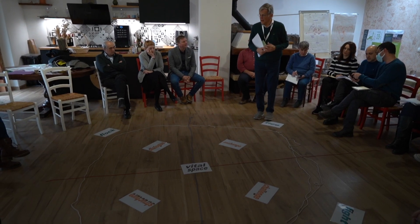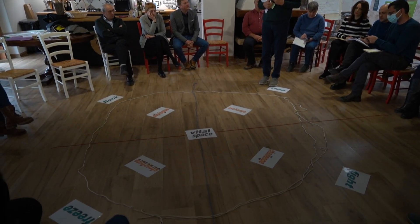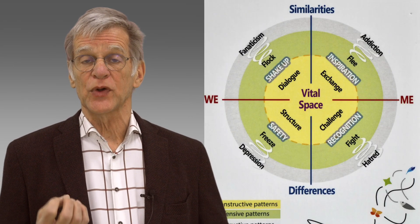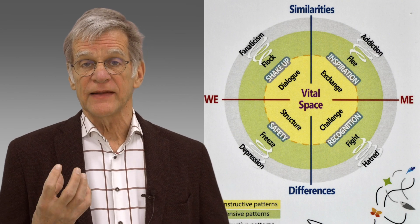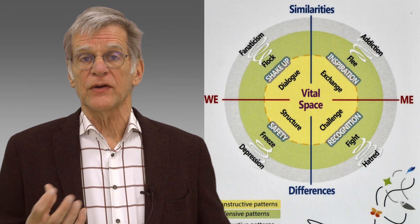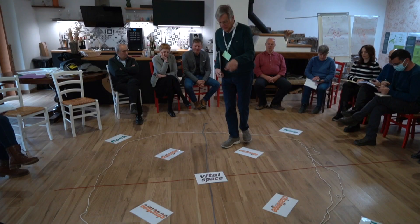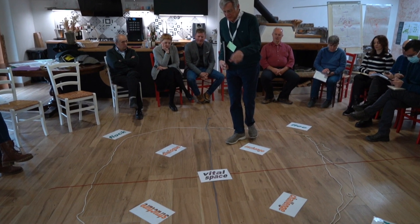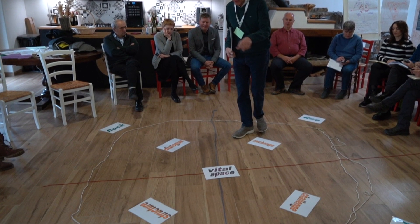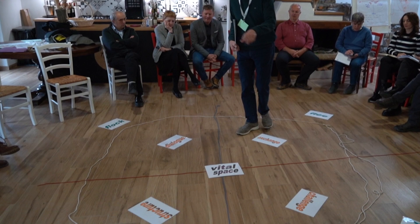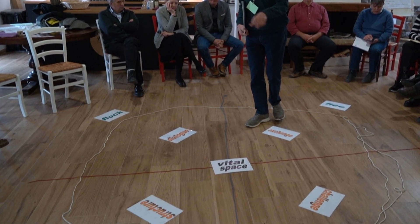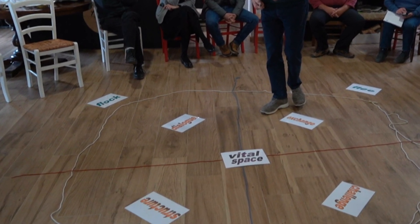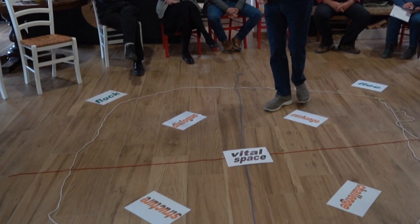The next model is the circle of coherence — it is the most complex one, but also the deepest one. It is all about energy and the energy you feel in what I call the vital space. In this vital space, people feel useful, they want to engage, they want to contribute, and they feel safe enough to make mistakes and to learn.